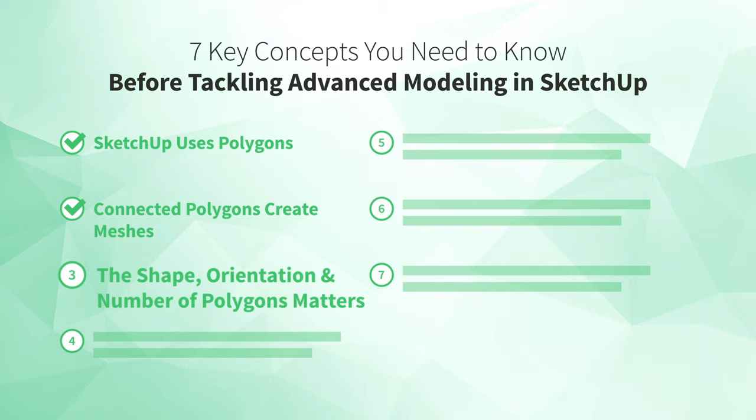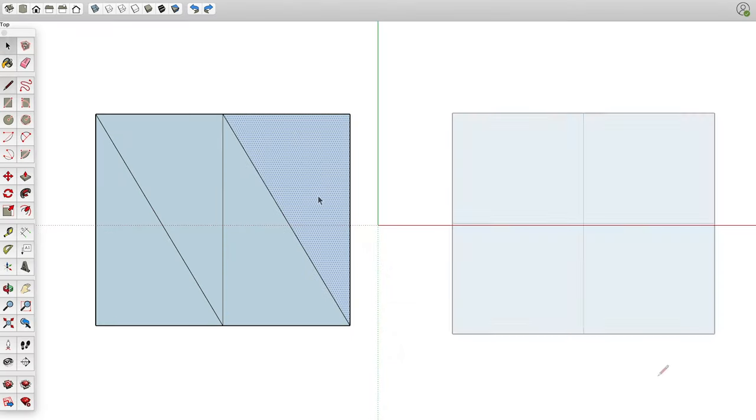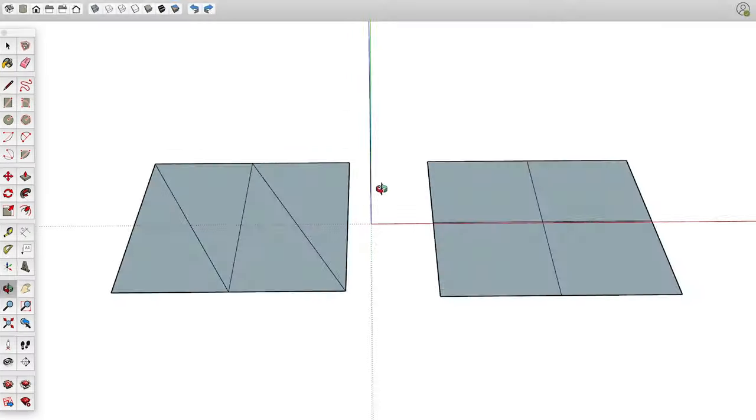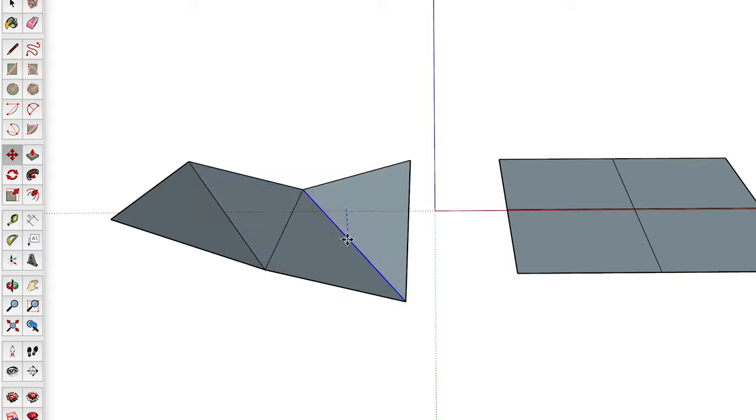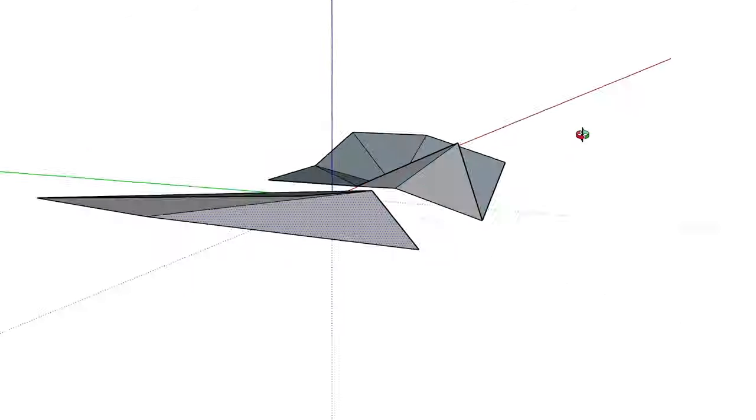That leads me to the next concept. Number three: the shape, orientation, and number of polygons matters. Let's back up to a more simple mesh made up of four polygons. It could be made up of four triangles or made up of four rectangles. The shape of the polygons that make up the mesh matters, since moving the endpoints, edges, and faces of one mesh will produce a different 3D surface than you can get with the other mesh. There's no right or wrong answer for what shape your polygon should be just yet. It's only important to notice this now before you tackle more complicated modeling tasks later.